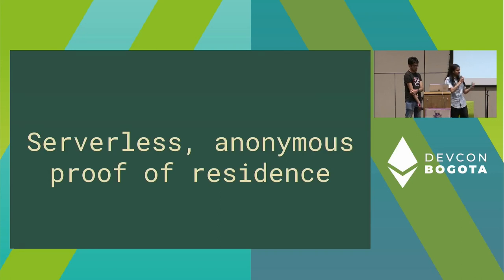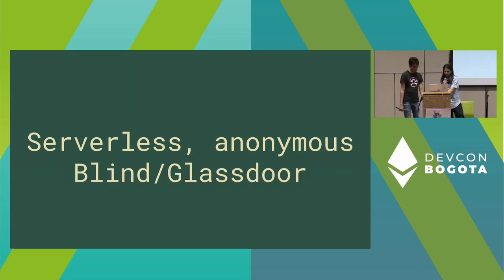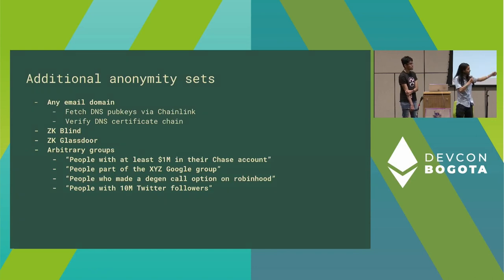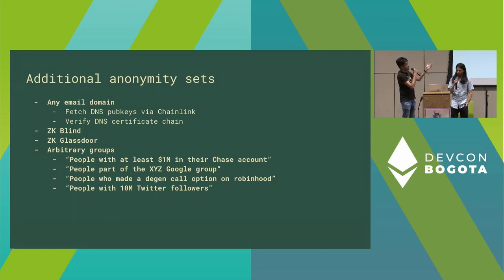Any data you can receive in an email you can verify on chain — this is extremely powerful for decentralized and anonymous applications. Proof of residence can be done by proving you have a gas or water bill. Anonymous groups are nearly unlimited: you could prove you have 10 million Twitter followers, that you made a profitable call option on Robinhood, or that you have a certain balance in your Chase account — because Chase sends your balance in plain text when you request it. Right now we have to rely on DNS, either hardcoding DNS keys in the contract or fetching them from Chainlink. If DNSSEC had been widely adopted, we could have verified certificates all the way to the root of trust, but unfortunately that didn't happen.